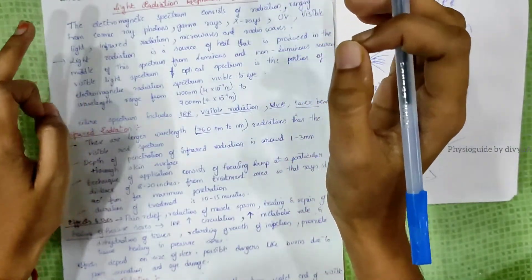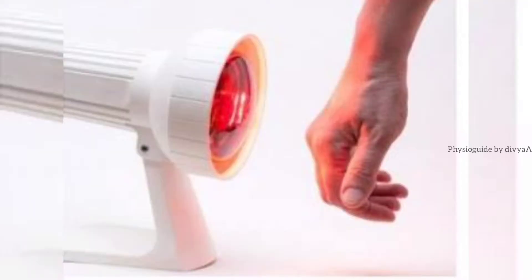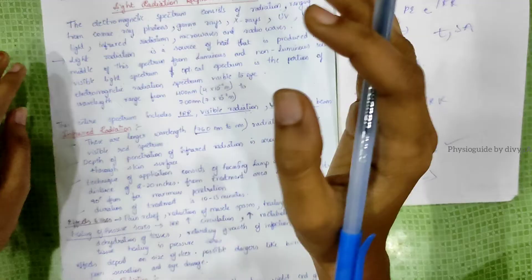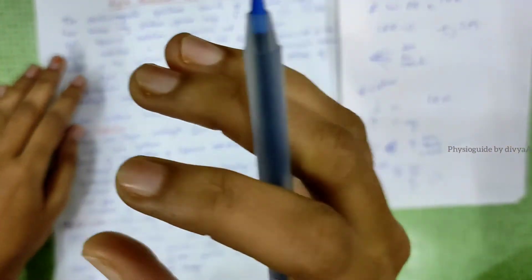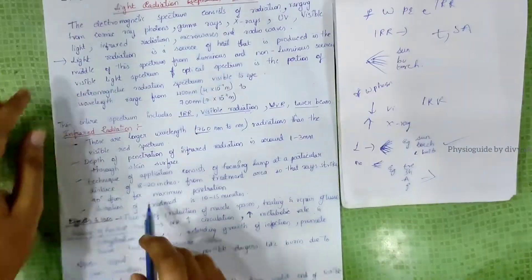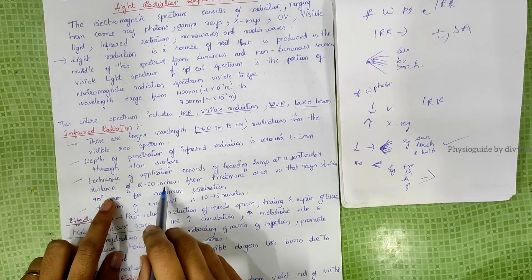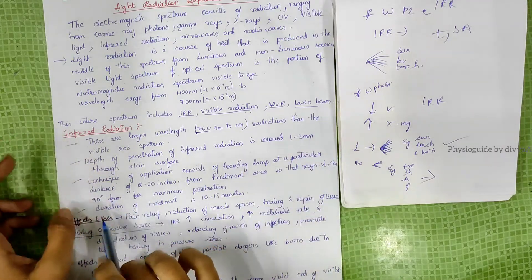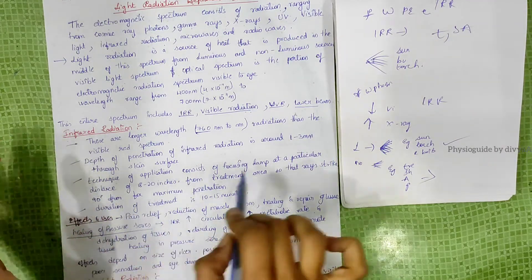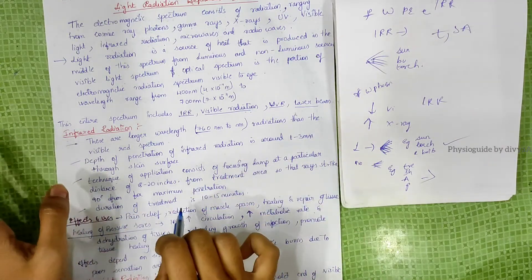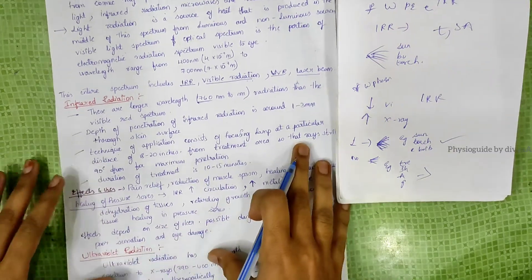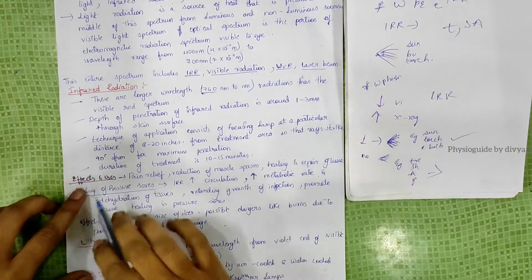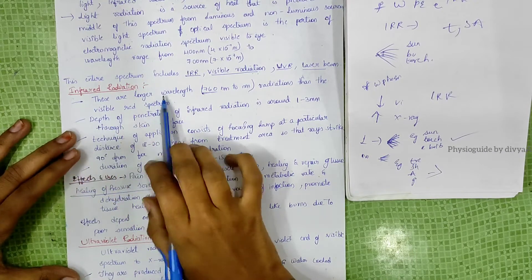The lamp is placed at a distance of about 18 to 20 inches from the treatment area, so that rays strike at 90 degrees for maximum penetration. Duration of treatment is 10 to 15 minutes. What are the effects and uses of infrared radiation?